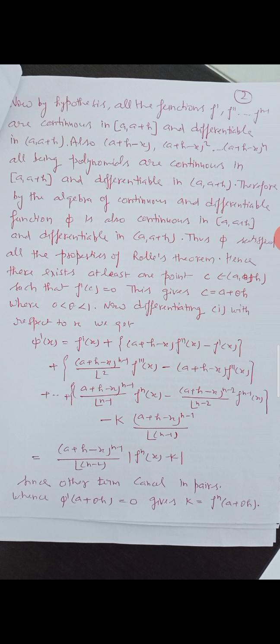Using this value of k in equation (2), we obtain the desired expansion of f(a+h). By taking h = x − a, we obtain another useful form of the theorem: f(x) = f(a) + (x−a)·f'(a) + (x−a)²/2! · f''(a) + ... + (x−a)^(n-1)/(n-1)! · f^(n-1)(a) + (x−a)^n/n! · f^n(a + θ(x−a)), where 0 < θ < 1. Thank you.